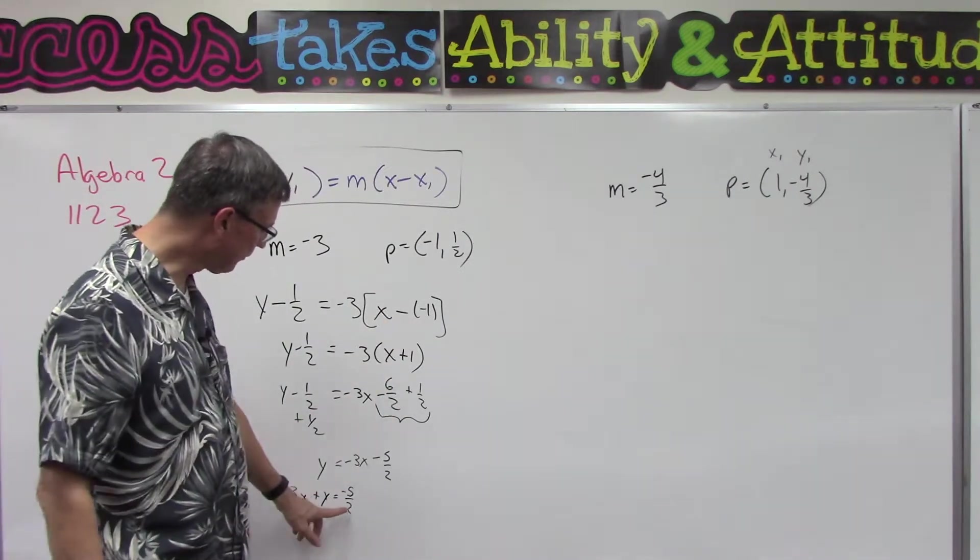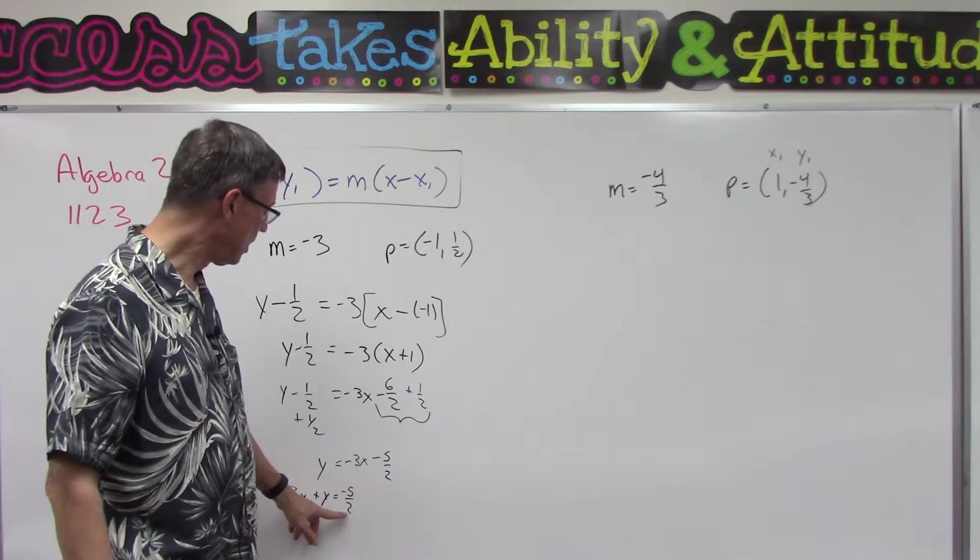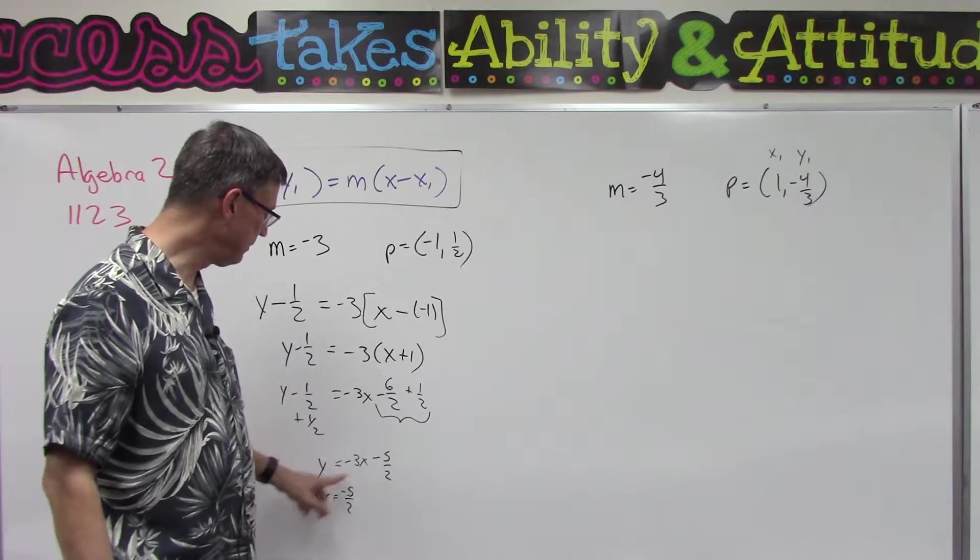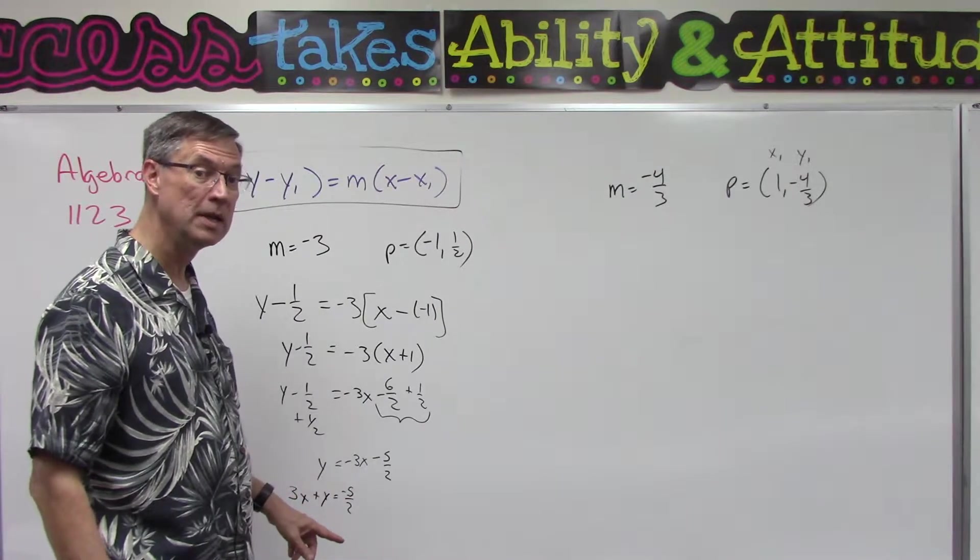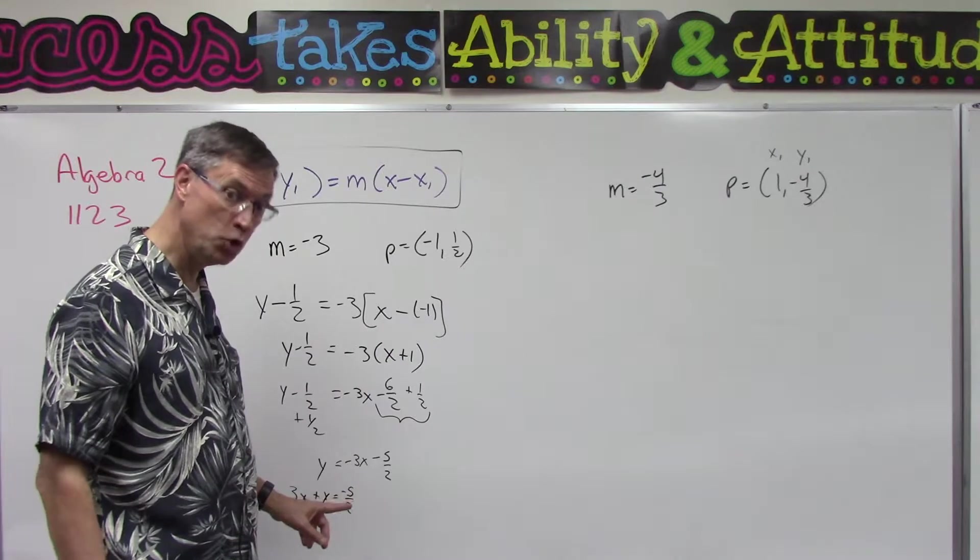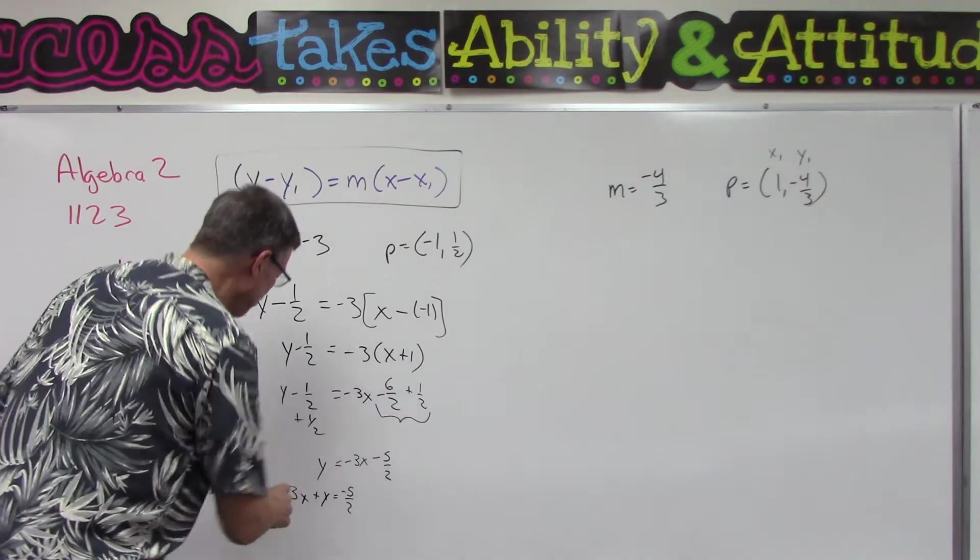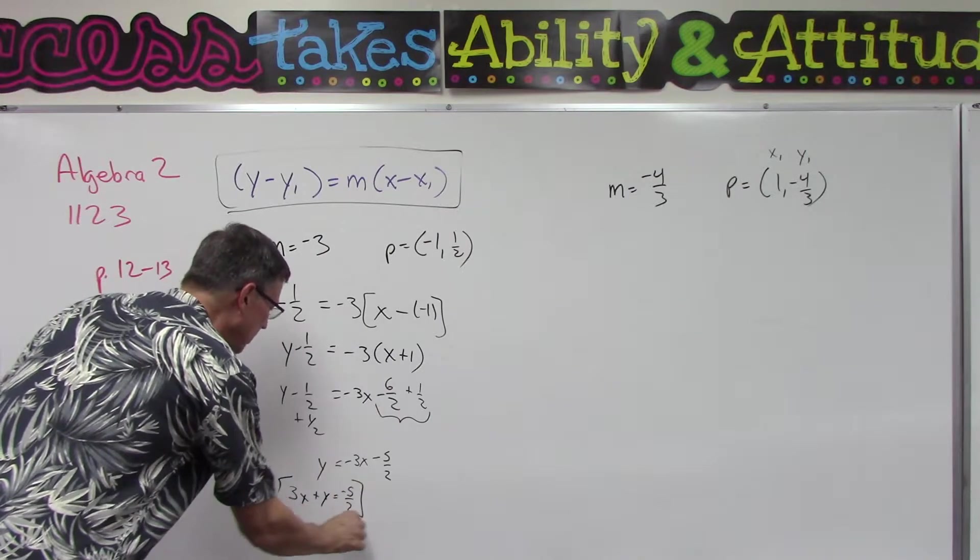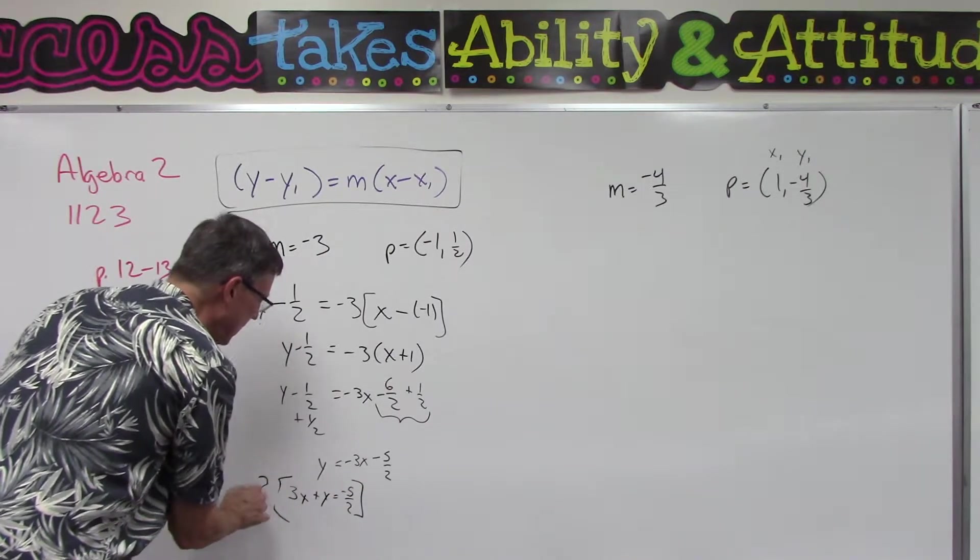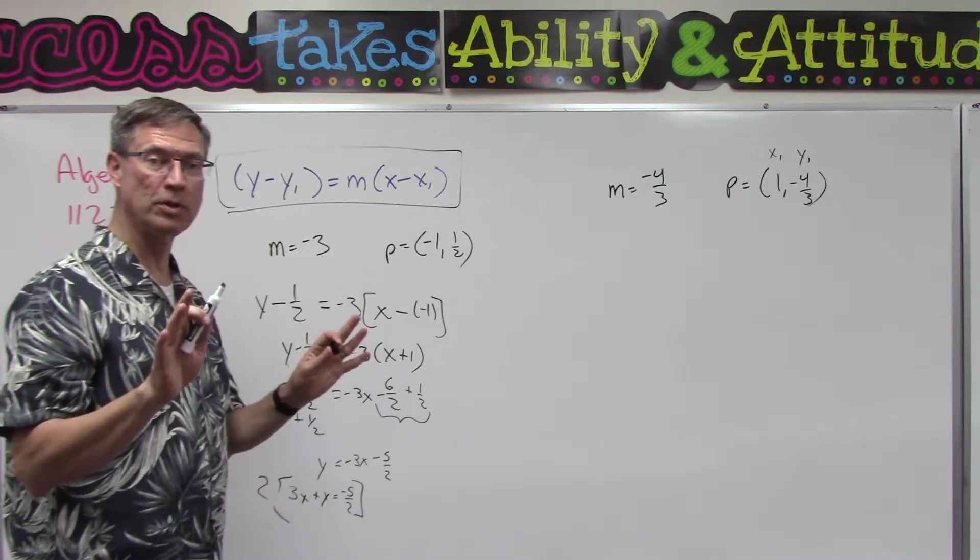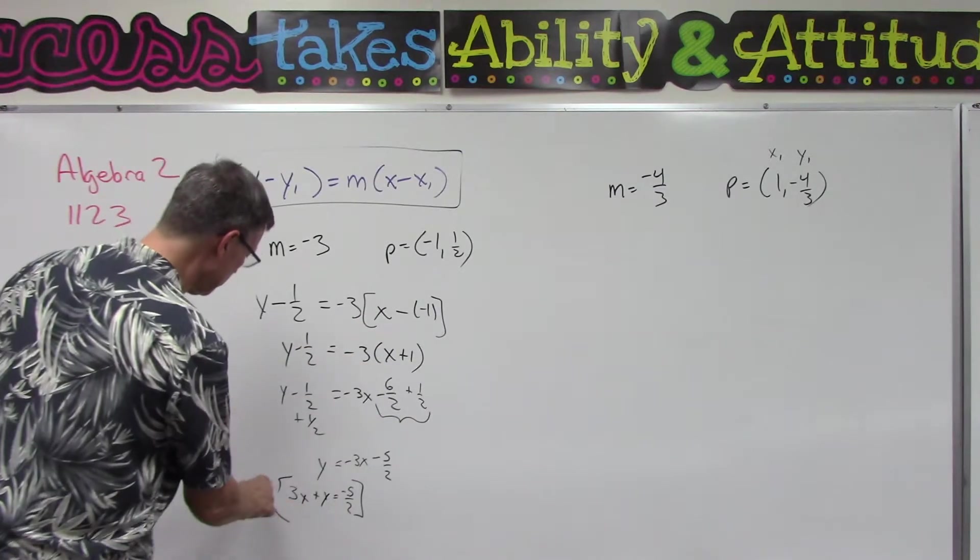So we still have a fraction here, we can't have a fraction on this side. What would I have to multiply times this to get rid of the fraction? Did you say two? Did I hear two? Yay. So multiply the whole equation by two. And now you can finish it. So I didn't give you the final answer - distribute that out, distribute that out, distribute that out. Leave your answer in that form.